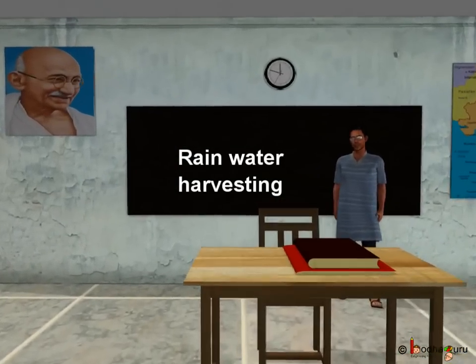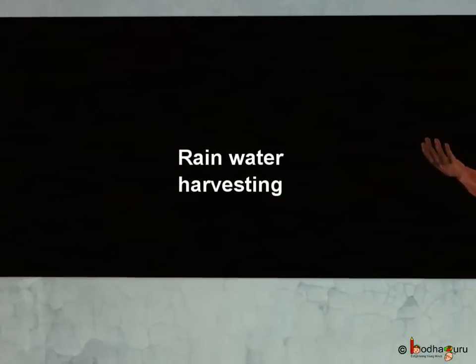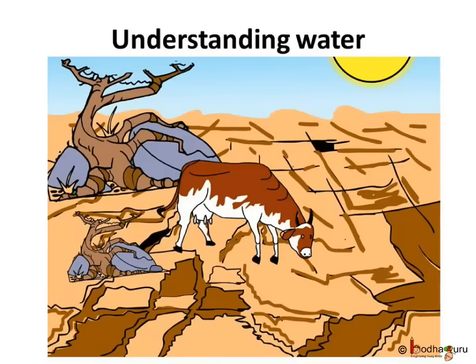Hello children! Today we shall learn about water conservation. In our previous video we saw what can happen if something goes wrong with the water cycle. The lack of rain leads to drought, or too much rain leads to water logging or floods.